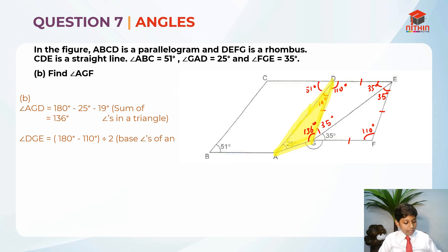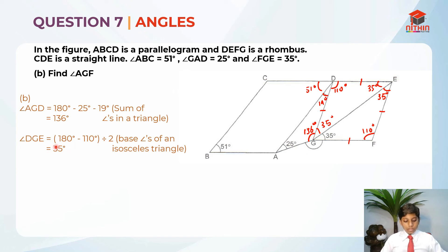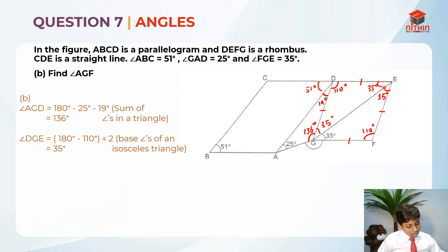This is basically how we find the 35 degrees. Instead of dividing all of this, we divide it in order to get 35 degrees, since the two isosceles triangles are identical. We can easily write 35 degrees on both sides. Remember: in a rhombus, when split in half, there are two identical isosceles triangles — so this angle equals this angle, and this angle equals this angle. Opposite angles are also equal to each other.